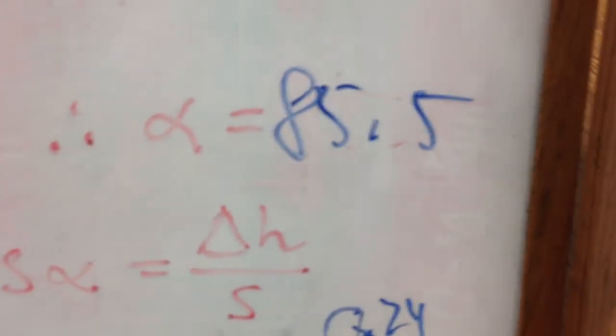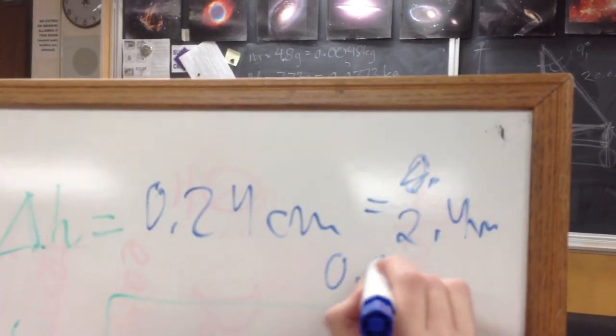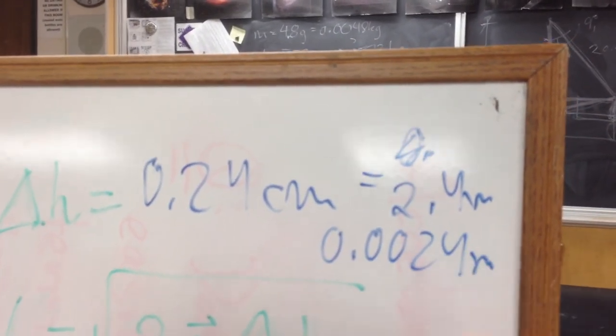So, that's here. This is 0.24 centimeters, which is 2.4 millimeters, 0.0024 meters.